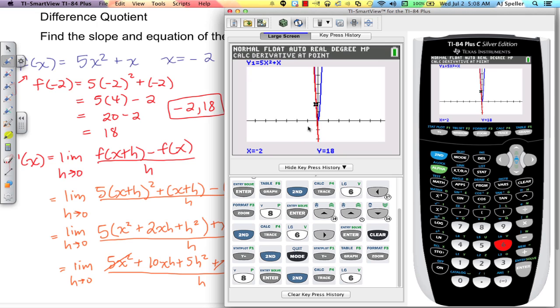We want the derivative when x is negative 2 and we're already set for the first equation, so at this point we can just press enter. And we see that the derivative does come out to be negative 19.